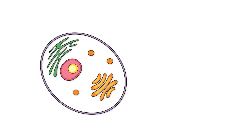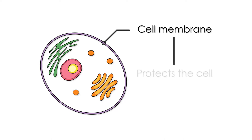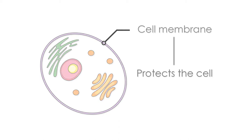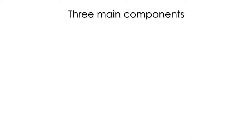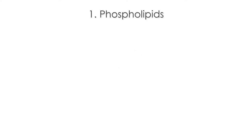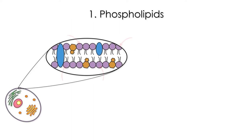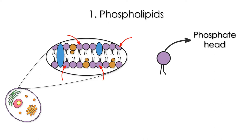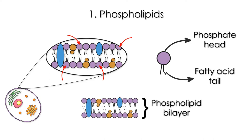Let's now see what it looks like. The cell membrane is what is outside the cell — it's what protects the cell from a really harsh outside environment. The cell membrane is composed of three main components: phospholipids, cholesterol, and proteins. Phospholipids are the major components of our cell membranes. They are a class of lipids formed by phosphate heads facing outwards and fatty acid tails facing inwards. Together, they form a phospholipid bilayer that separates the external from the internal environment.